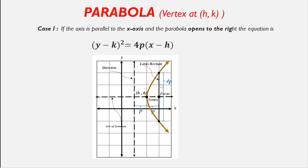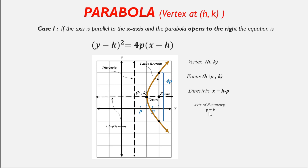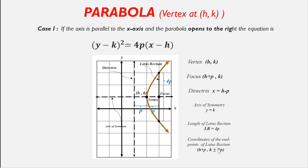The length of the latus rectum is 4 times the value of p. The axis of symmetry is y = k. The coordinates of the endpoints of the latus rectum can be found: since the focus is at (h + p, k), the ordinate is added by positive or negative 2p, giving endpoints at (h + p, k ± 2p).